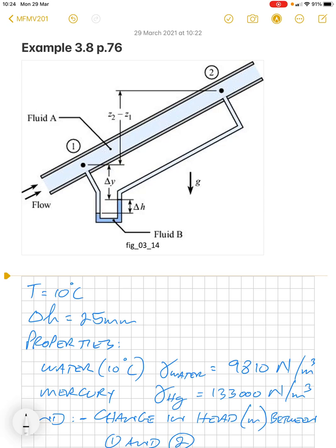There is a manometer that's connected between two different points, that's point one and point two. Fluid B in the manometer is actually mercury, fluid A being water.